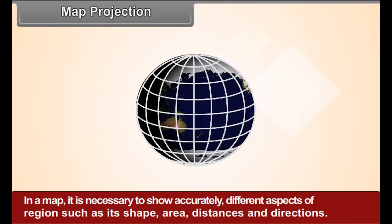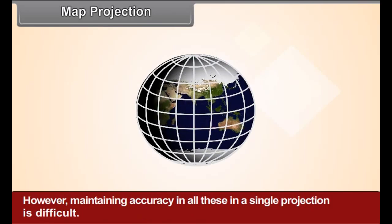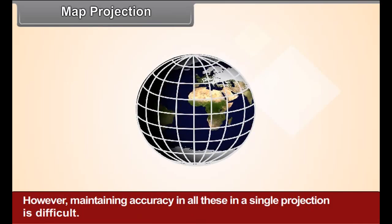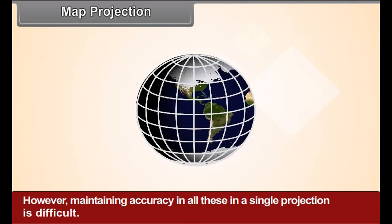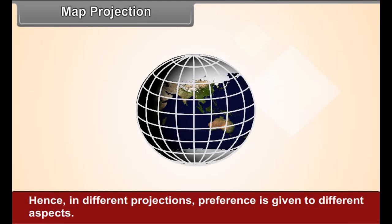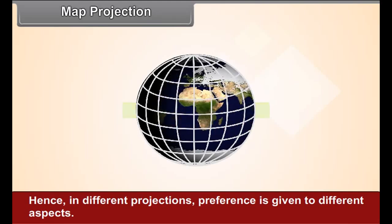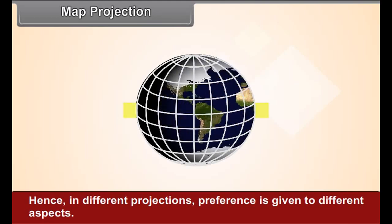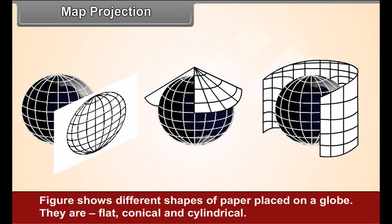distances, and directions. However, maintaining accuracy in all these in a single projection is difficult. Hence, in different projections, preference is given to different aspects. Figure 2.1 shows different shapes of paper placed on a globe.